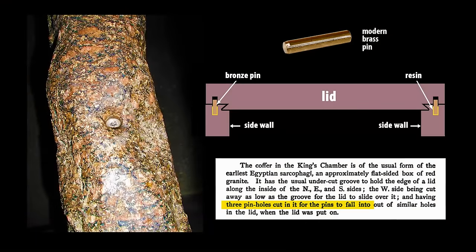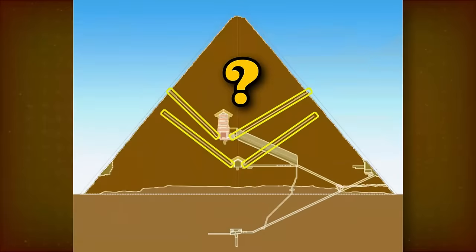Khufu's sarcophagus had a solid lid, locked with metal pins. To get anywhere at all, the soul had to pass through this lid, a physical object. If the soul can pass through objects, why dig a path for it through the pyramid?